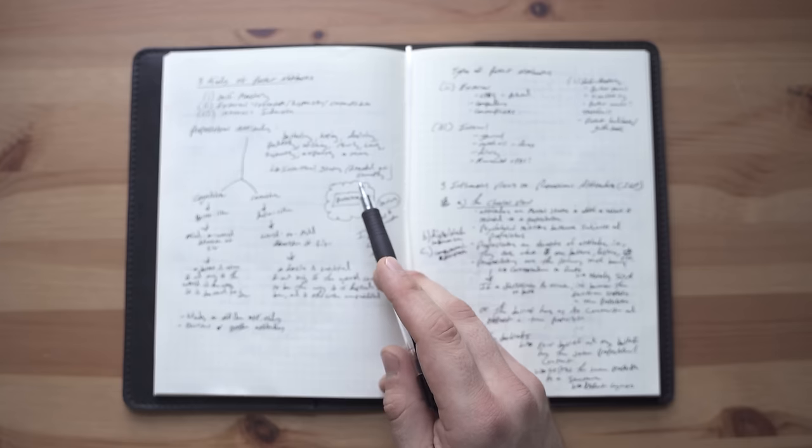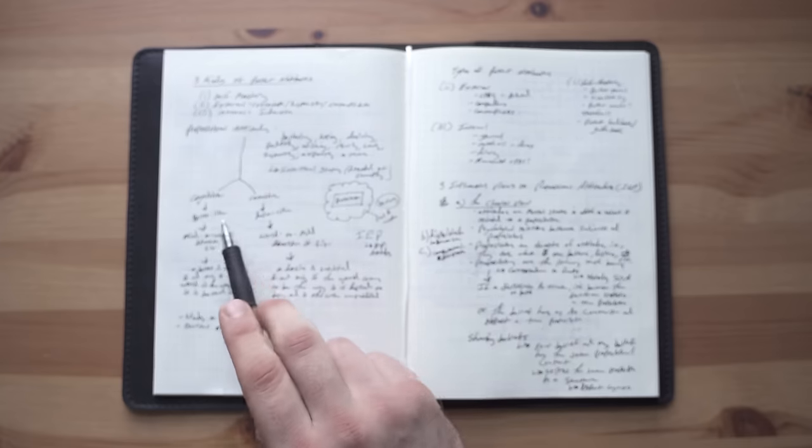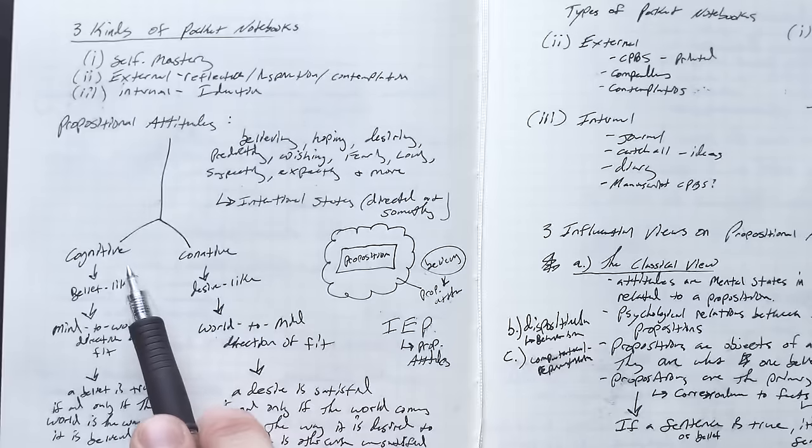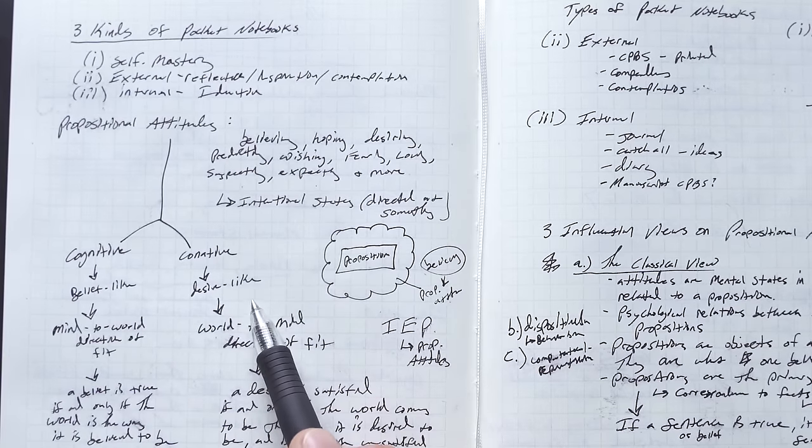Philosophers divide propositional attitudes into two kinds, cognitive and conative. Cognitive is belief-like, conative is desire-like.